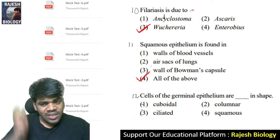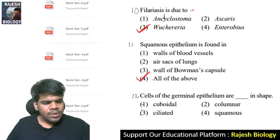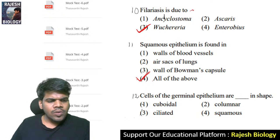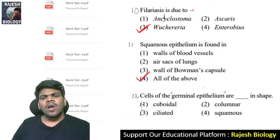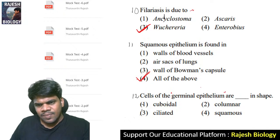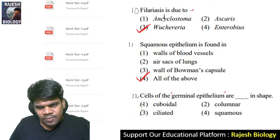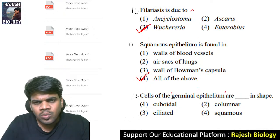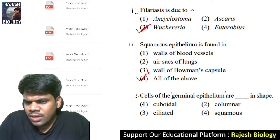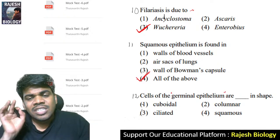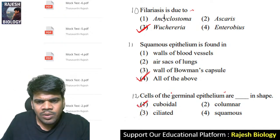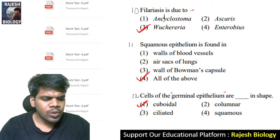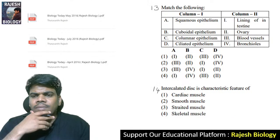Twelfth question: cells of the germinal epithelium are — wherever you find the word germinal epithelium, whether in ovary or testis, there is a germinal epithelium which gives rise to the ovum or sperm. Germinal epithelium is always cuboidal epithelium.